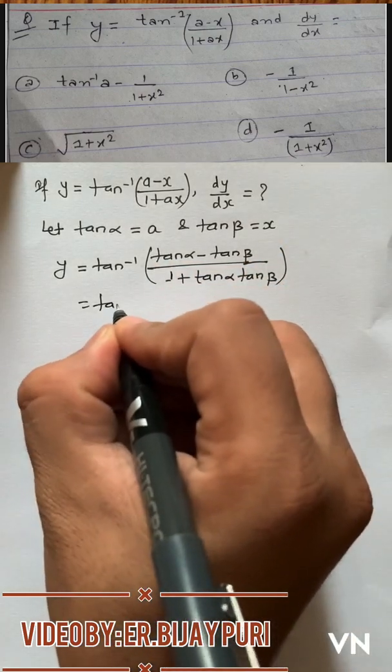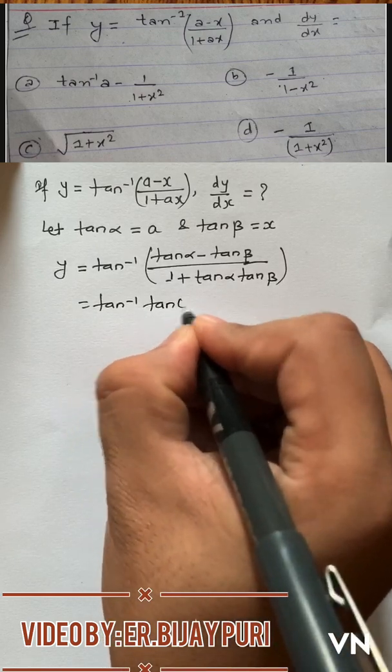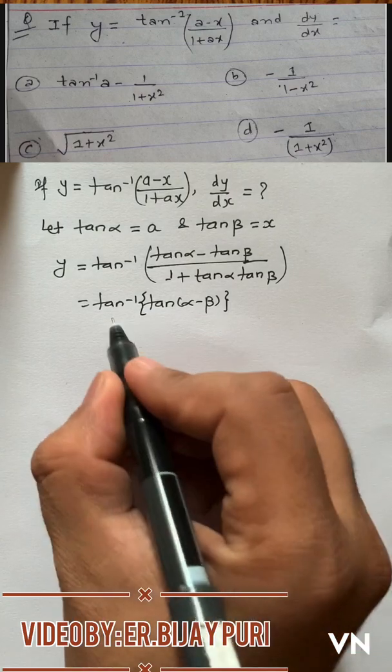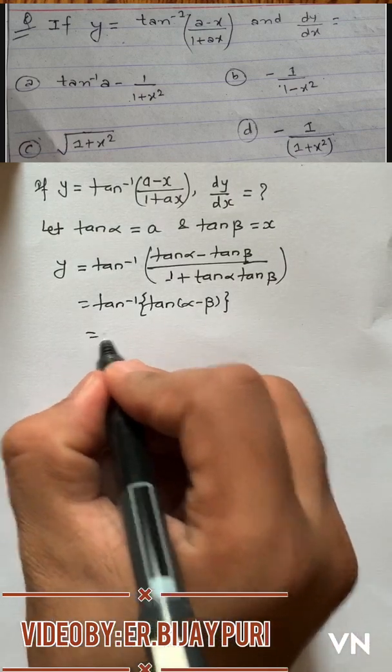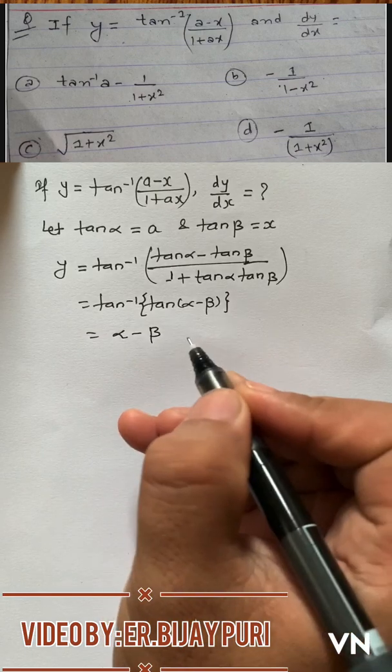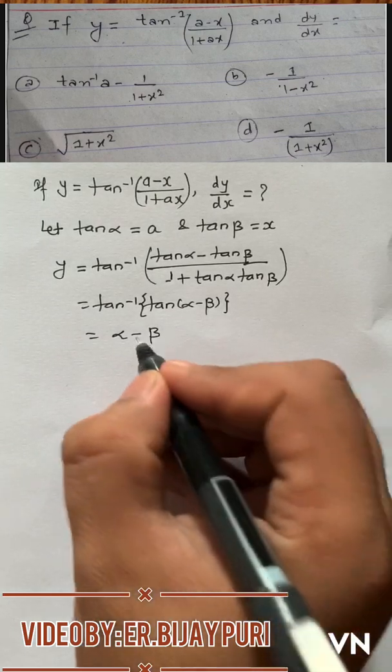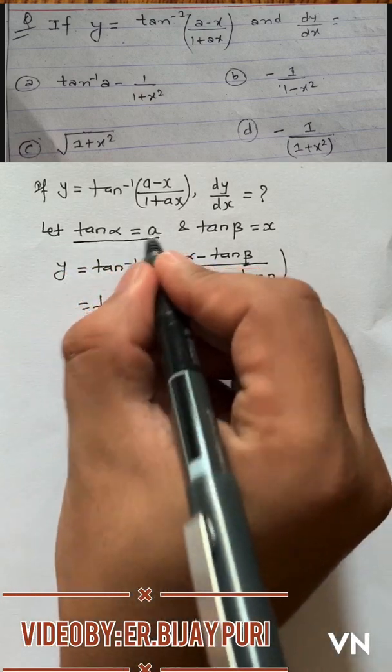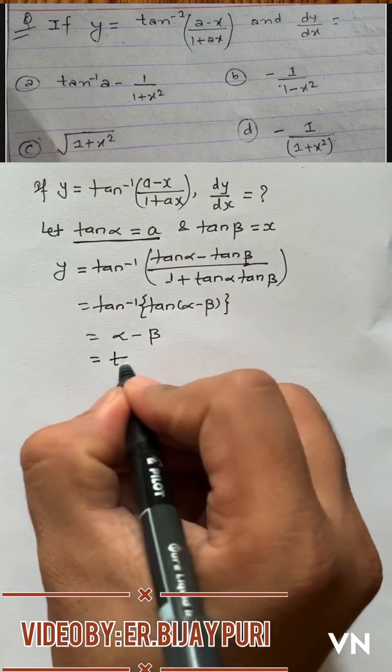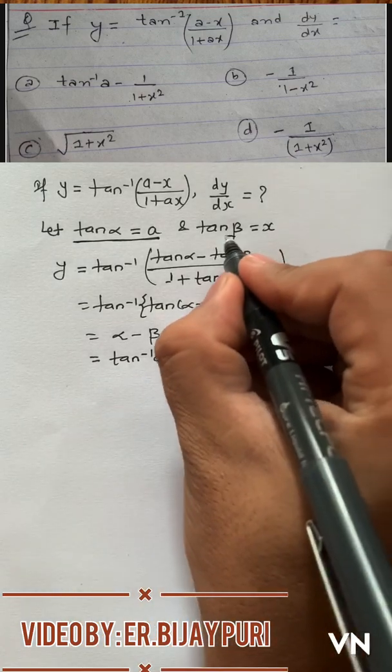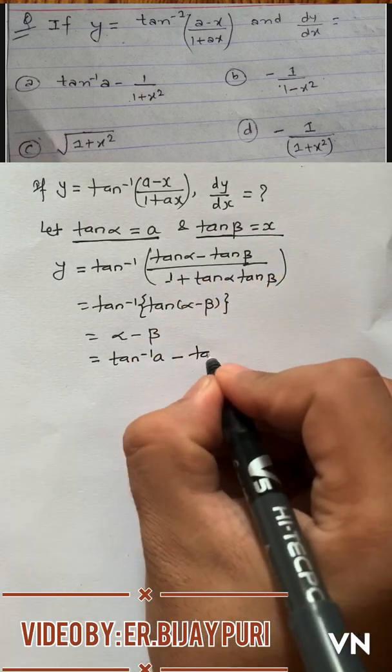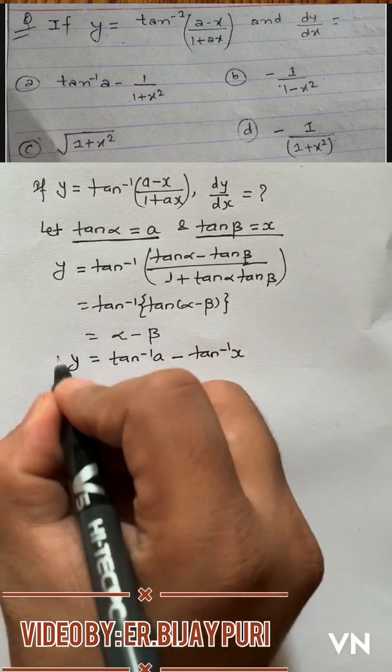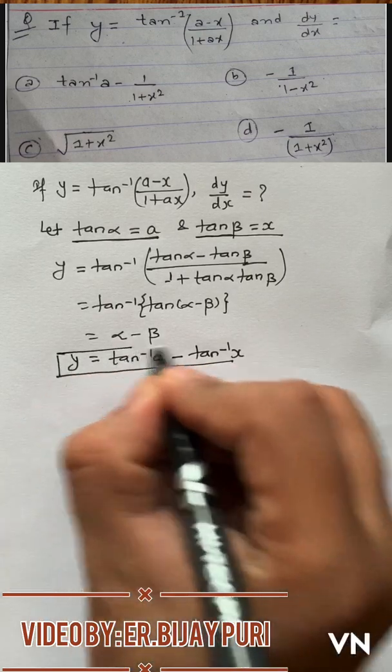This is actually the formula of tan(alpha minus beta). As we know tan inverse tan theta equals theta, that's why this becomes alpha minus beta. So we can change this alpha minus beta in terms of a and x: alpha is tan inverse a, beta is tan inverse x.